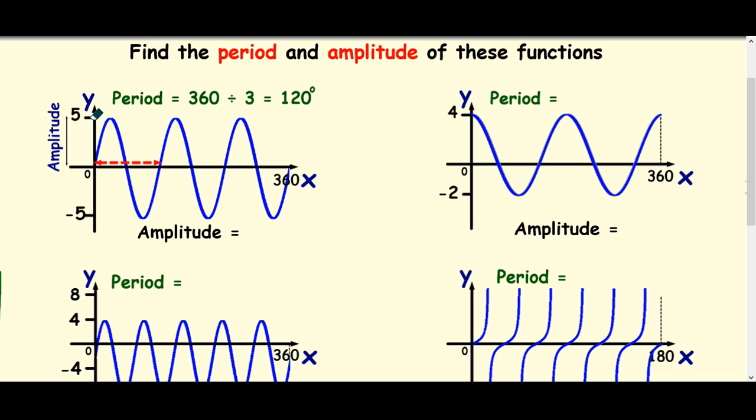The amplitude in this one, that's not been shifted up or down, so that's quite easy. The amplitude is just how high the wave is above the center line, because it goes to 5 minus 5. The amplitude is just 5.